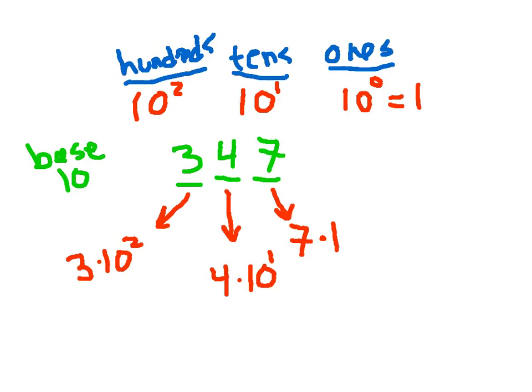So if we were to simplify this, we obviously know this is 3 hundreds, this is 40, and this is 7. And when we add all those up, we once again get 347.